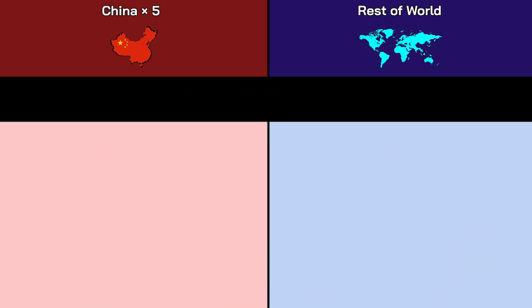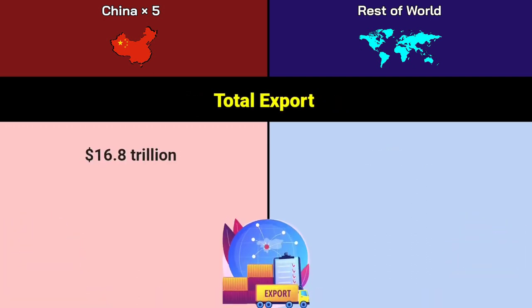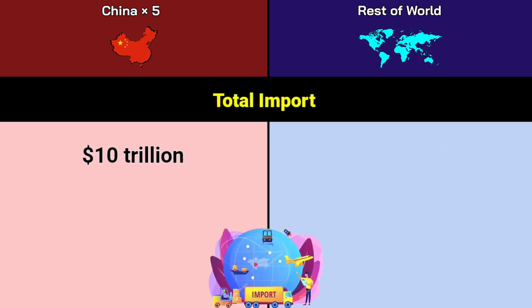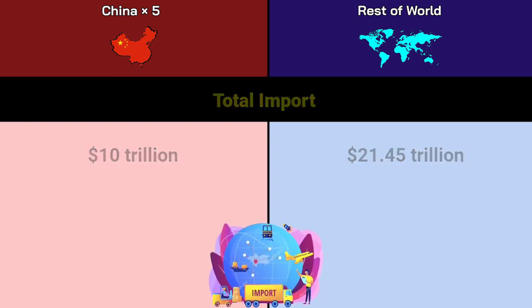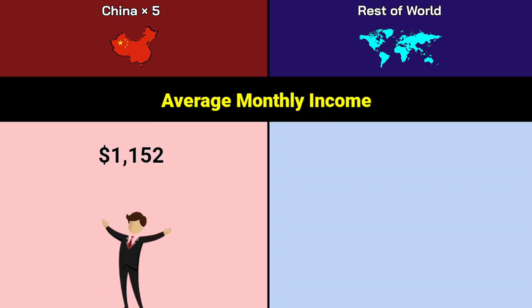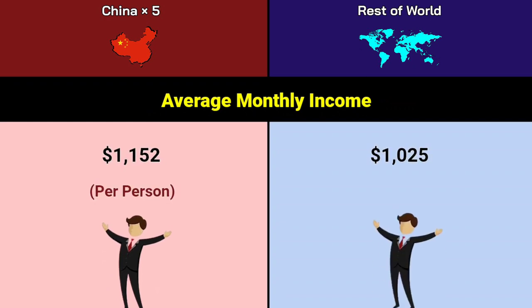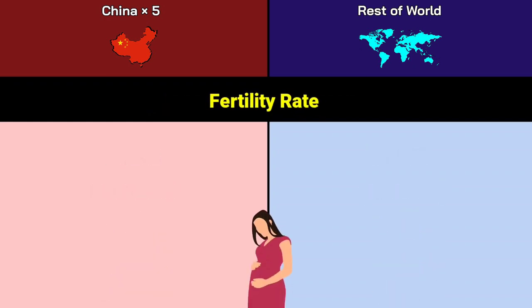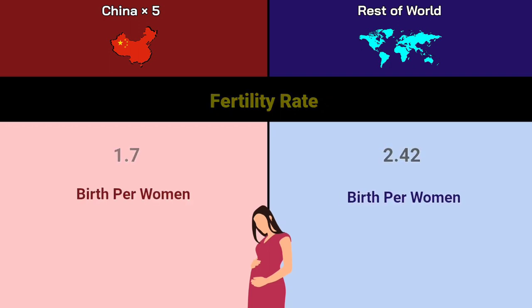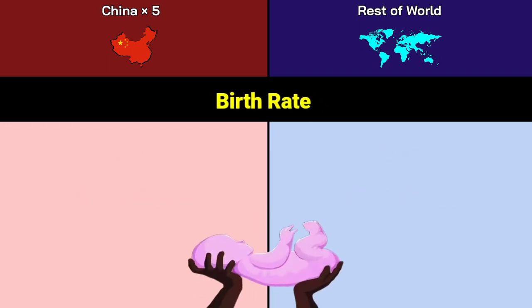Total exports: China 16.8 trillion dollars, Rest of World 21 trillion dollars. Total imports: China 10 trillion dollars, Rest of World 21.45 trillion dollars. Average monthly income: China 1,152 dollars per person, Rest of World 1,025 dollars per person. Fertility rate: China 1.7, Rest of World 2.42 births per woman.